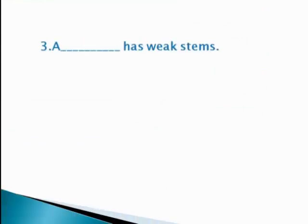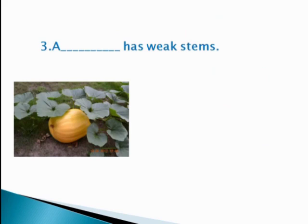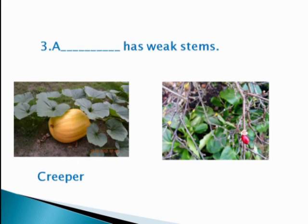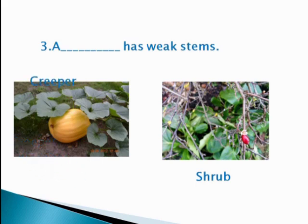Number 3 blank: a dash has a weak stem. Here we have a creeper in the first option and a shrub in the second option. You can see the stem of a shrub that is woody. But here you can see a creeper that grows along the ground just because of a weak stem. So the answer would be: a creeper has a weak stem.